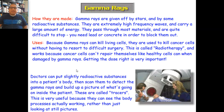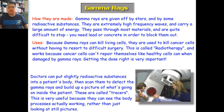So how are they made? Gamma rays are given off by stars and some radioactive substances. Will gamma rays cause cancer? It is possible, and it's also possible to change your DNA. They are extremely high frequency waves that carry a large amount of energy. They can damage or cause harm — they pass through materials and are quite difficult to stop. You need lead or concrete in order to block them.